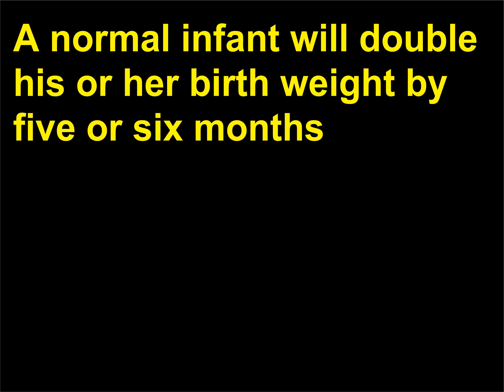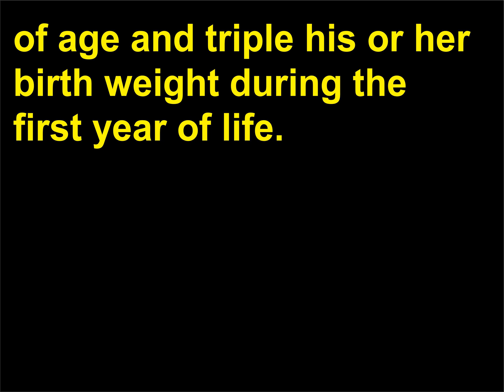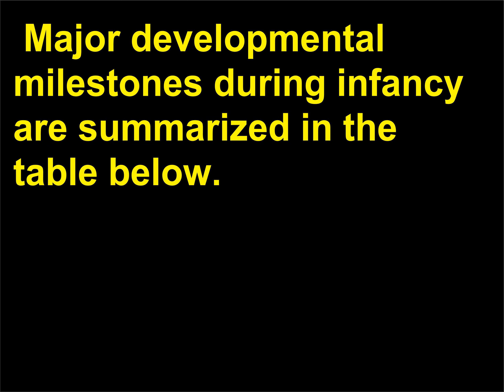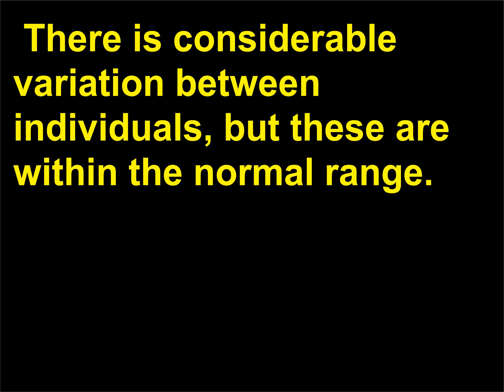A normal infant will double his or her birth weight by five or six months of age and triple his or her birth weight during the first year of life. Major developmental milestones during infancy are summarized in a table. There is considerable variation between individuals, but these are within the normal range.